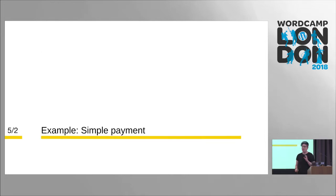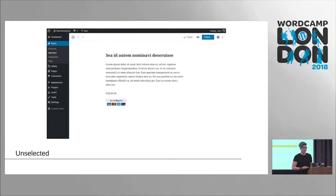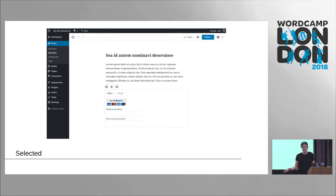Now I'm going to look at a really basic one — a simple payment block. It's a great illustration of how a block does not have to be complicated. We get very complicated in thinking about blocks, but simpler is better when it comes to interfaces. Here we have the unselected state, and the selected state. Pretty simple — it just does one thing.